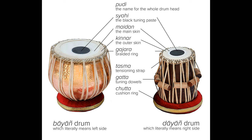Scales commonly used in Indian classical music are A, A#, B, B#, C, C sharp, D, D#, E, E#, F, F sharp, G, and G# in order.